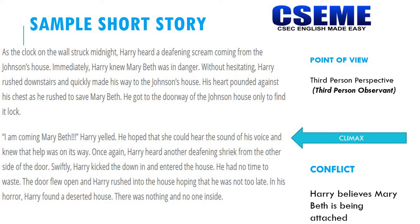Now, if we look at the point of view from which the story is being told, we see from the use of the third person pronouns — he, she, they — that the point of view is the third person perspective. Although we hear Harry's thoughts, we do not get the perspective from all the characters. And because of that, we can see this is an example of third person observant.